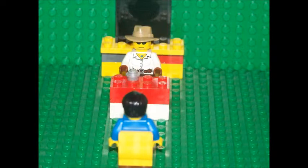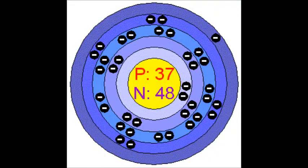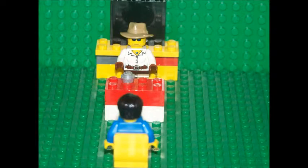The atom looks like a bunch of clusters of electrons orbiting around a nucleus of 37 protons and 48 neutrons. And here's a picture of the atom. Maybe I should slow down a bit. An atom is the smallest unit of an element that has all of the properties of that element.